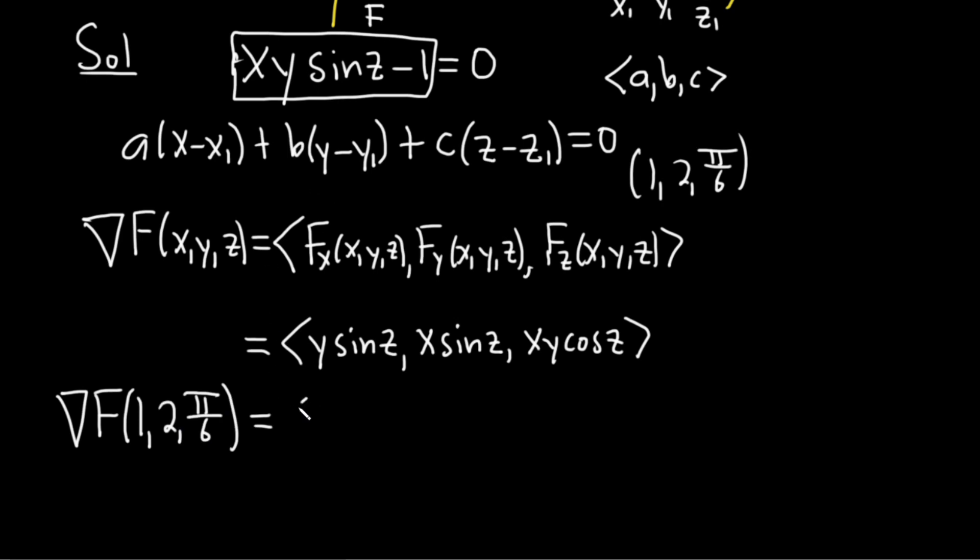Okay, so this is going to be y, which is 2, and then the sine of pi over 6. We'll do it in steps. I'm going to write it all down very carefully. And then x is 1 times, again, the sine of pi over 6. And then x, y, so it's going to be 1 times 2, so just 2 times the cosine of pi over 6. Okay. Just like that. Very nice.